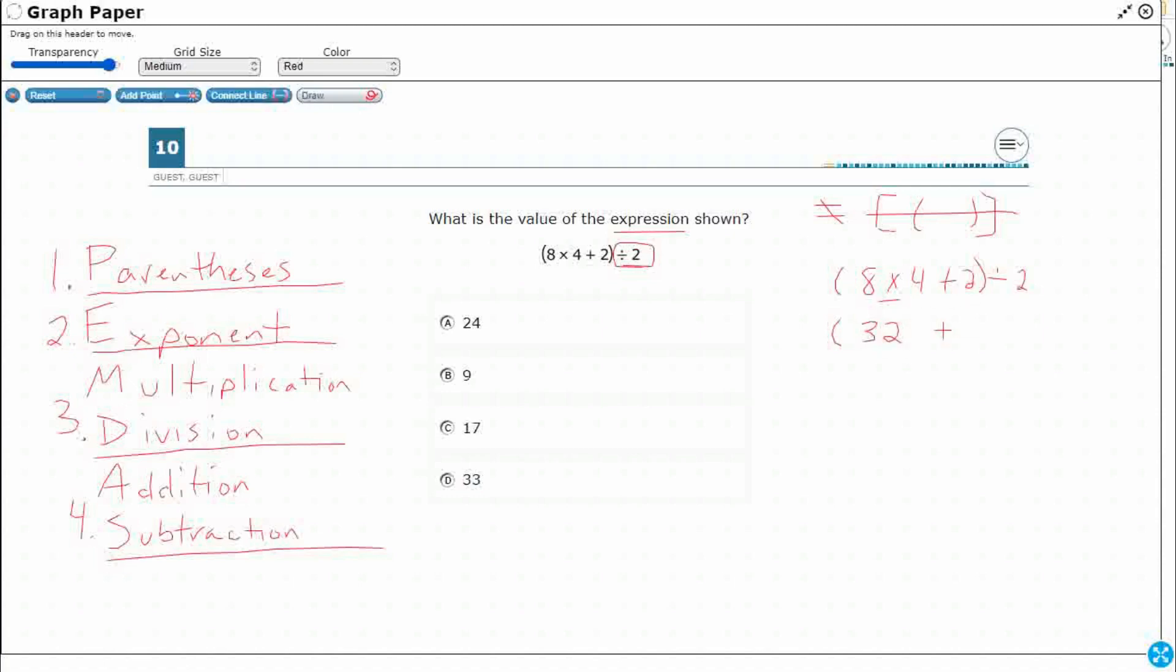But everything else stays the same. Plus two, and then divided by two. Now I'm still within the parentheses. There's only one operation left. It's the 32 plus two.